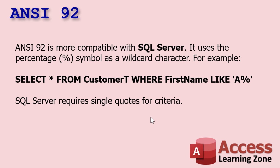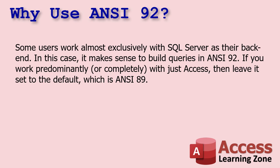If you're working with SQL Server, ANSI 92 is the standard you have to use for queries. In fact, some users work almost exclusively with SQL Server because Access makes a great front end — a great rapid application development tool. You can build your queries, forms, and reports and make a beautiful desktop interface, then put all your data in SQL Server so it can be secured and even online. So if you're not using SQL Server, you need to make sure your database is set to ANSI 89.